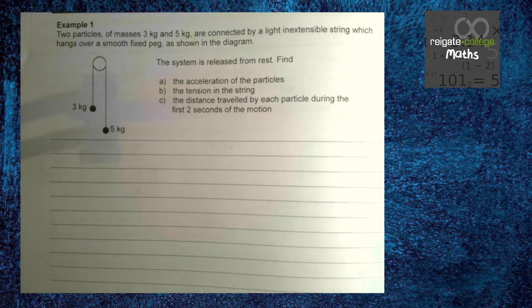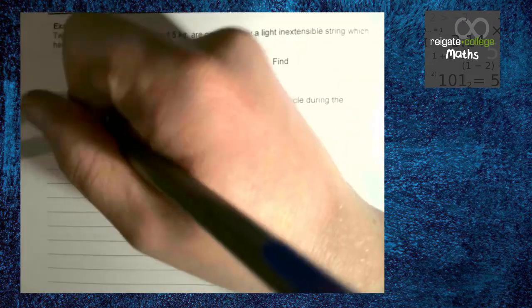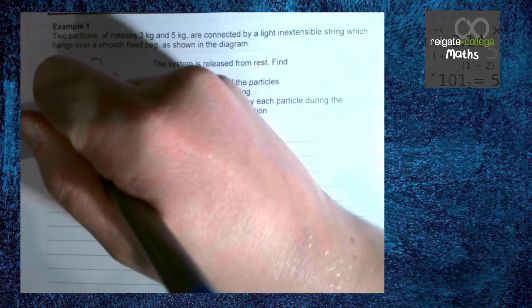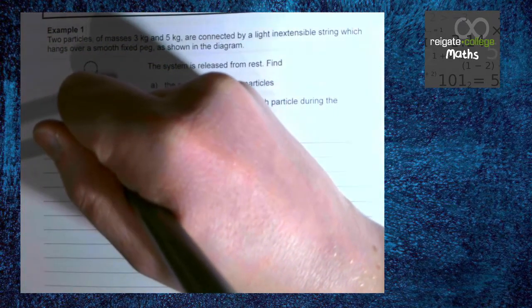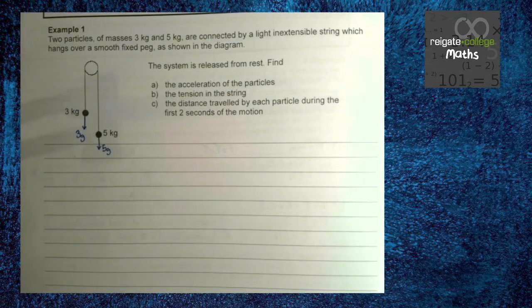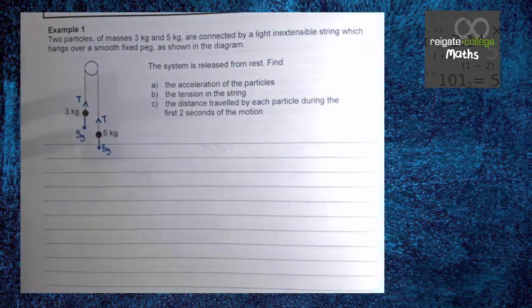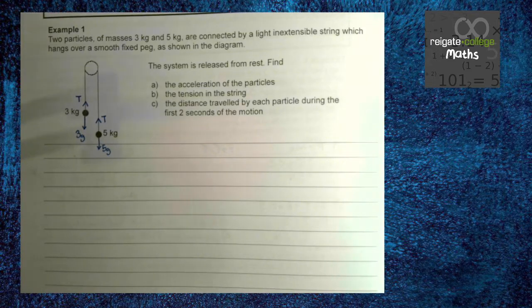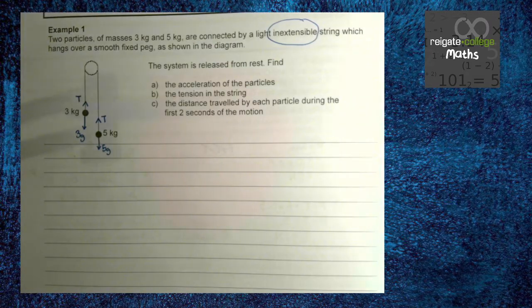So the system is held at rest and then it is released. We want to find a bunch of information. So, as usual, first things first, let's label the diagram with all of the forces. So we've got this particle here, this 3 kilograms, which has a weight. Now we know the weight of this is going to be 3g. And the weight of this particle here is going to be 5g. On the string, there are going to be several tensions. But the only ones we need to worry about are these tensions here. The key thing is that these tensions are the same. Again, like before, it's down to the fact that the string is inextensible. It doesn't stretch.